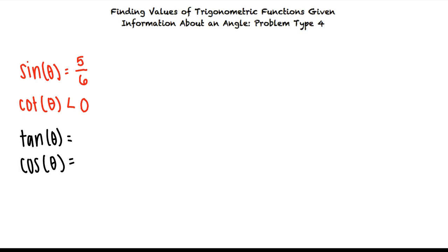From the given information we can deduce what quadrant theta is in and we can also draw a triangle that will help us solve the problem. I don't understand how we can tell what quadrant theta is in. Let's take a look at a coordinate axis.